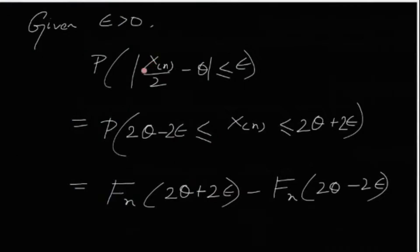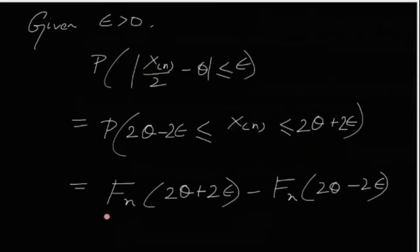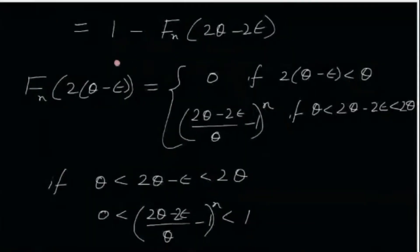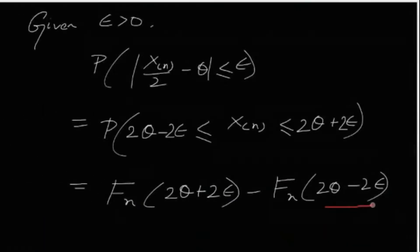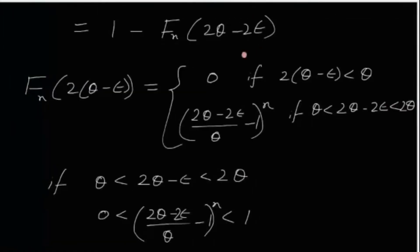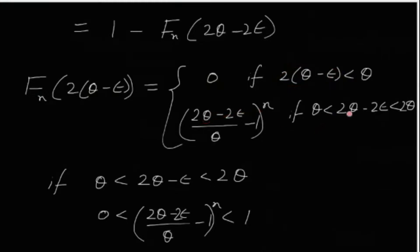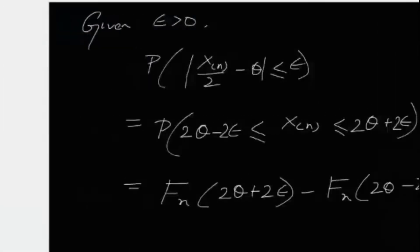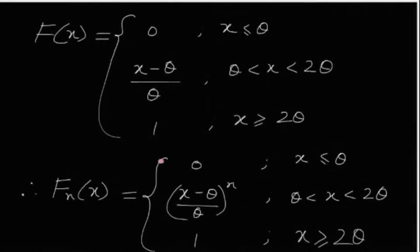For the third part, given ε > 0, P(|X_(n)/2 − θ| ≤ ε) = P(2θ − 2ε ≤ X_(n) ≤ 2θ + 2ε) = Fn(2θ + 2ε) − Fn(2θ − 2ε). Since 2θ + 2ε > 2θ, we have Fn(2θ + 2ε) = 1. For Fn(2θ − 2ε), the value depends on whether 2θ − 2ε is less than θ or lies between θ and 2θ.